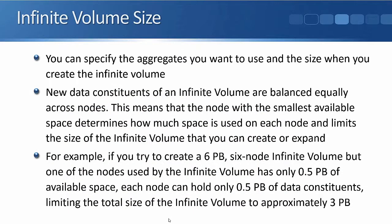You can specify the aggregates you want to use and the size of the infinite volume when you create it. New data constituents of an infinite volume are balanced equally across nodes, meaning all data constituents are the same size. This means the node with the smallest available space determines how much space is used on each node and limits the size of the infinite volume. For example, if you try to create a 6-petabyte, 6-node infinite volume but one node only has half a petabyte of available space, each node can hold only half a petabyte of data constituents, limiting the total size to approximately 3 petabytes.